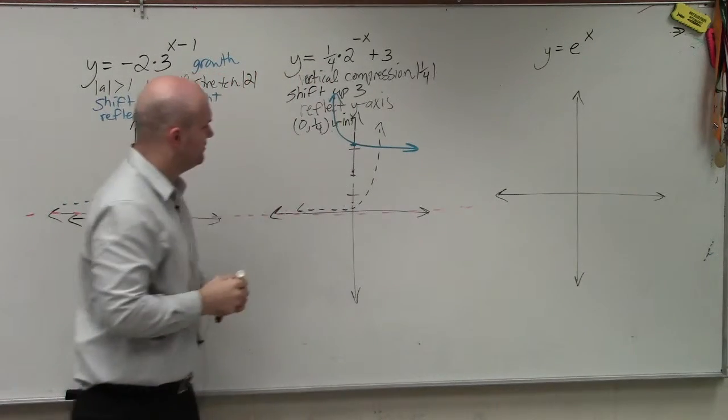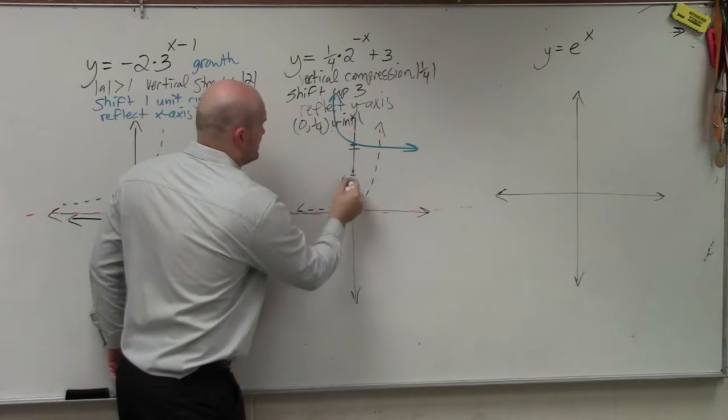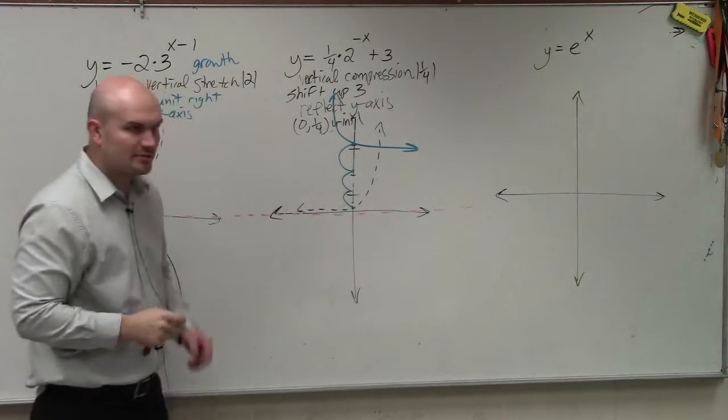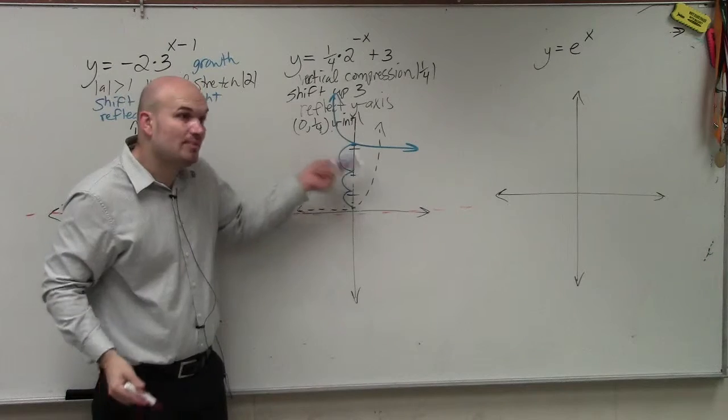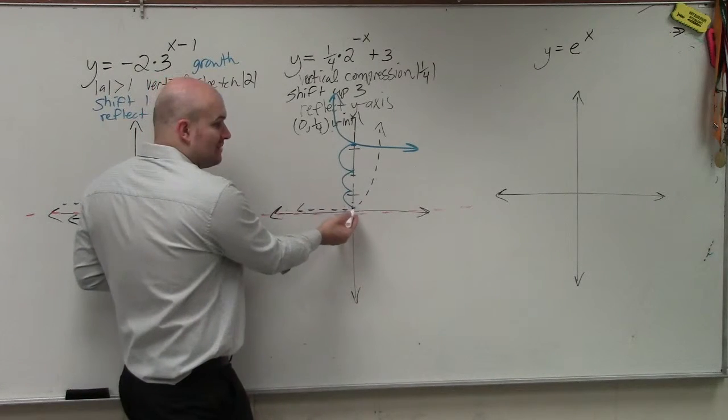Sorry, that should be up 1 more unit, right? 1, 2, 3. Correct? 3 units up. Well, again, this asymptote is a part of the graph. So what else gets shifted up? The asymptote. 1, 2, 3.